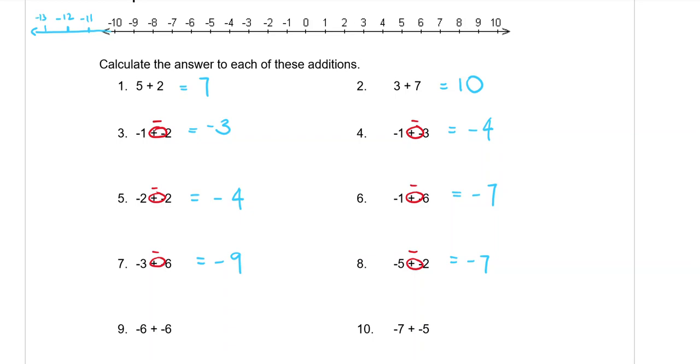So question 9, again the plus minus makes a minus. Same with question 10, we want those plus minuses to be a minus. Question 9, we're starting at negative 6 and we are going to the left 6 places: 1, 2, 3, 4, 5, 6 and we land at negative 12.